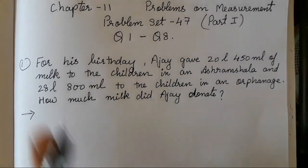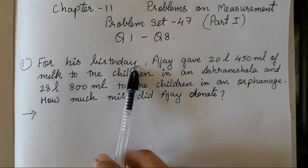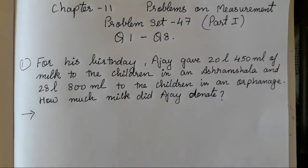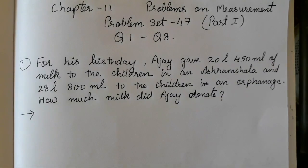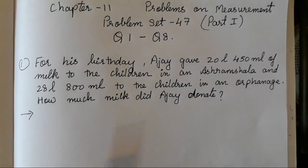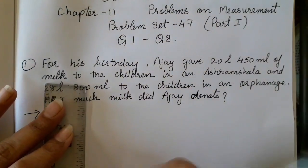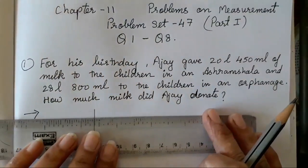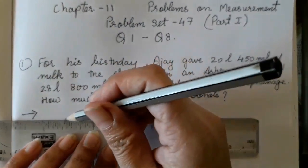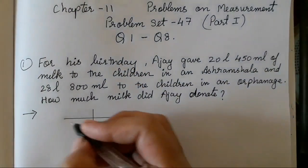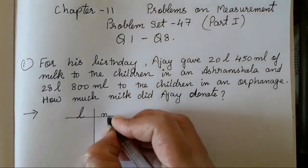Let's start with the first question. For his birthday, Ajay gave 20 litres 450 millilitres of milk to the children in an ashram shala and 28 litres 800 millilitres to the children in an orphanage. How much milk did Ajay donate? They have asked the total amount of milk donated, so we need to add to find the total. This is going to be in litres and millilitres.